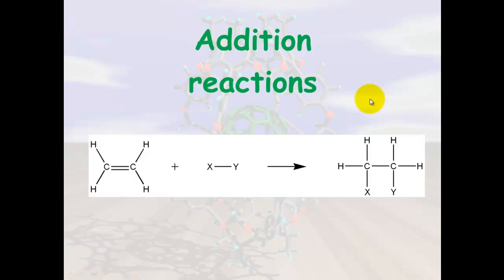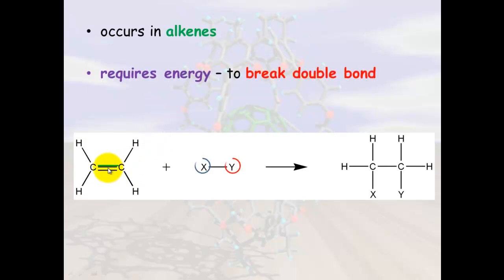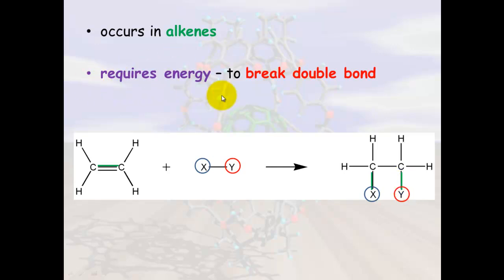The third type of reaction with hydrocarbons is addition reactions, and these occur with alkenes — anything with a double bond. What happens is the double bond breaks open and adds X to one side and Y to the other side, forming new bonds. Energy is required to break this double bond.